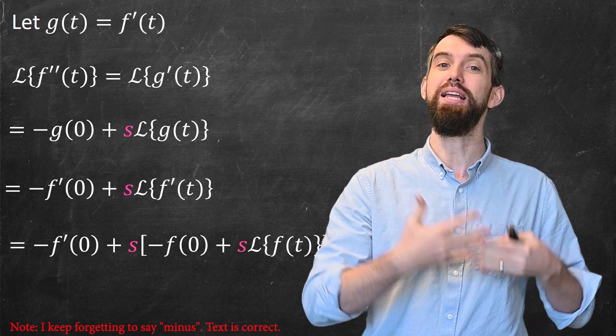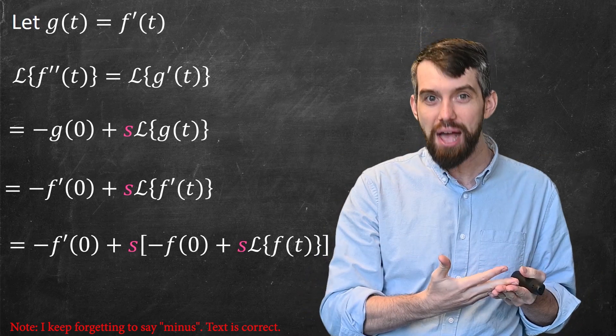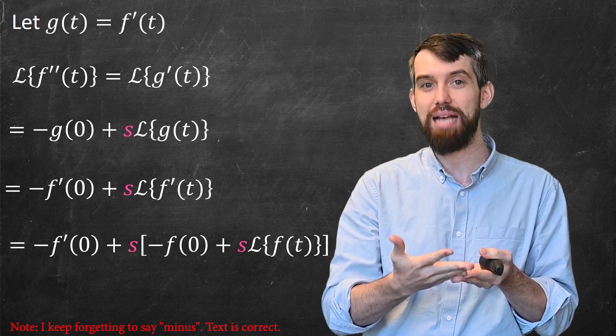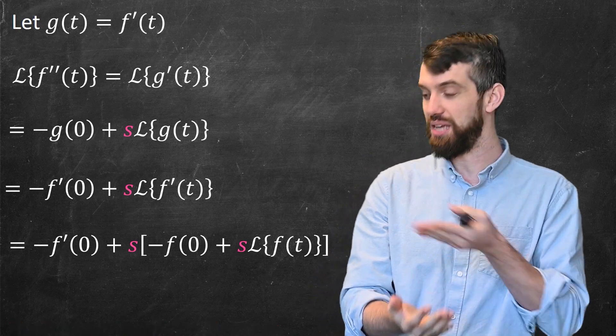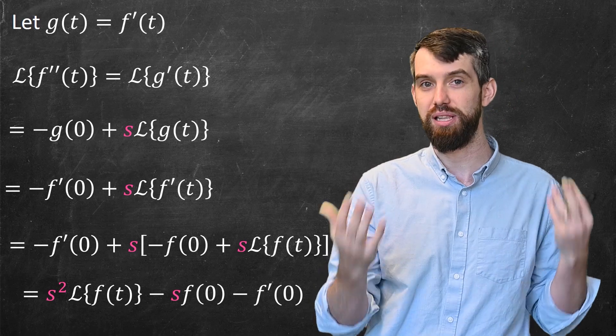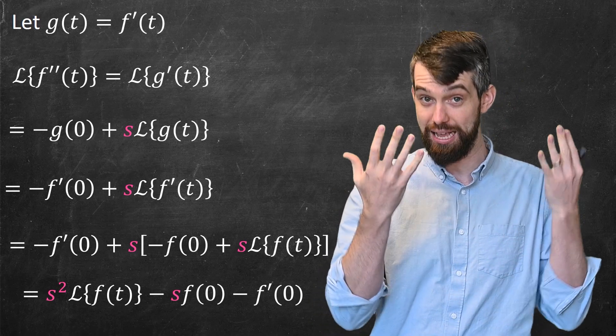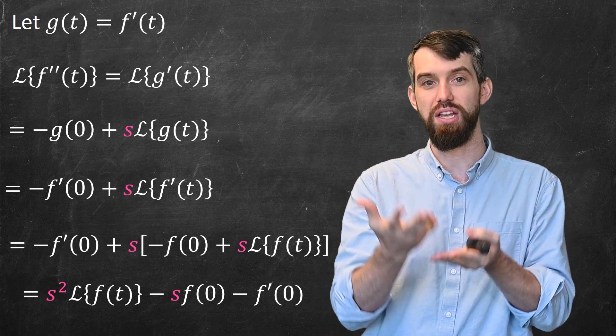So what do I get? Well, the -f'(0) doesn't go anywhere, the s doesn't go anywhere, but inside I have another -f(0) plus an s times the Laplace transform of f. So I get this complicated expression and I can perhaps clean it up in its more standard form as I've got an s² term, an s term, and a constant term.